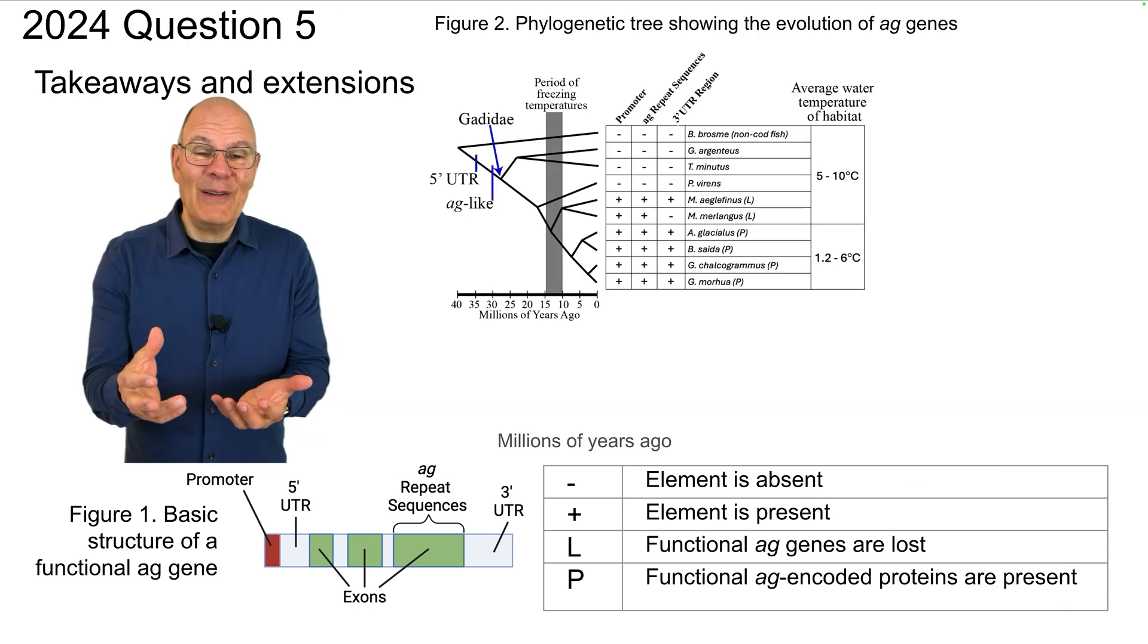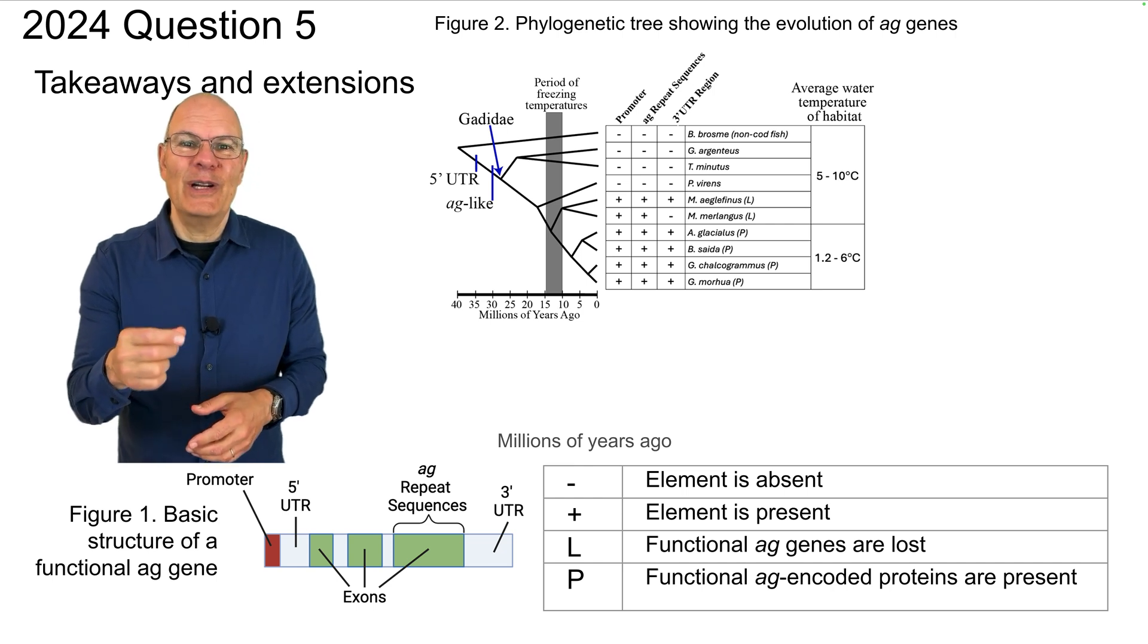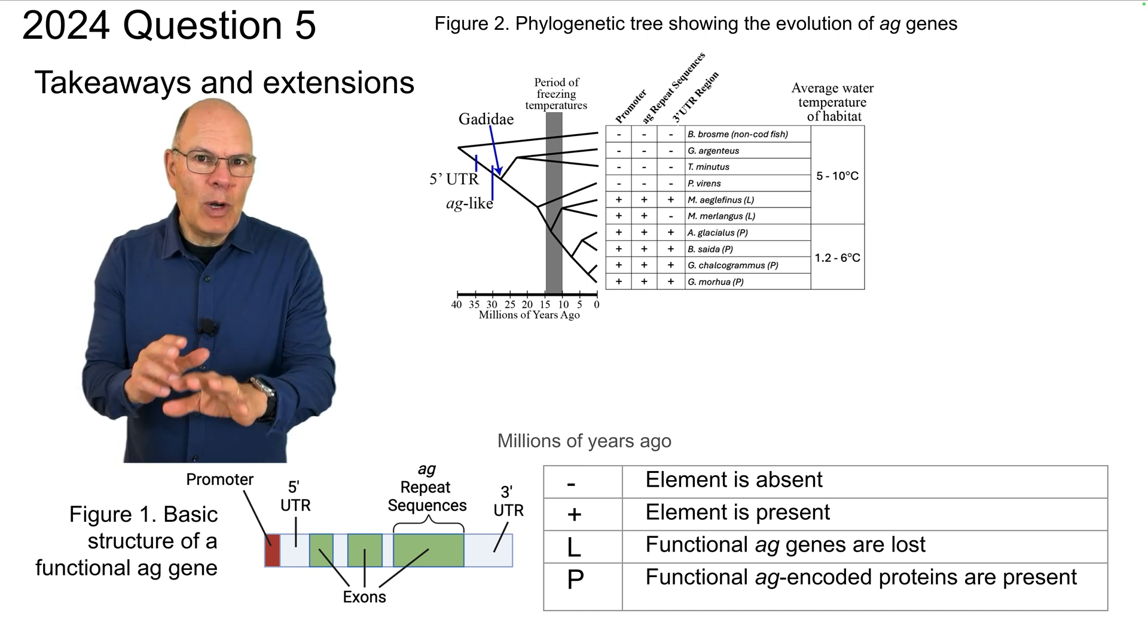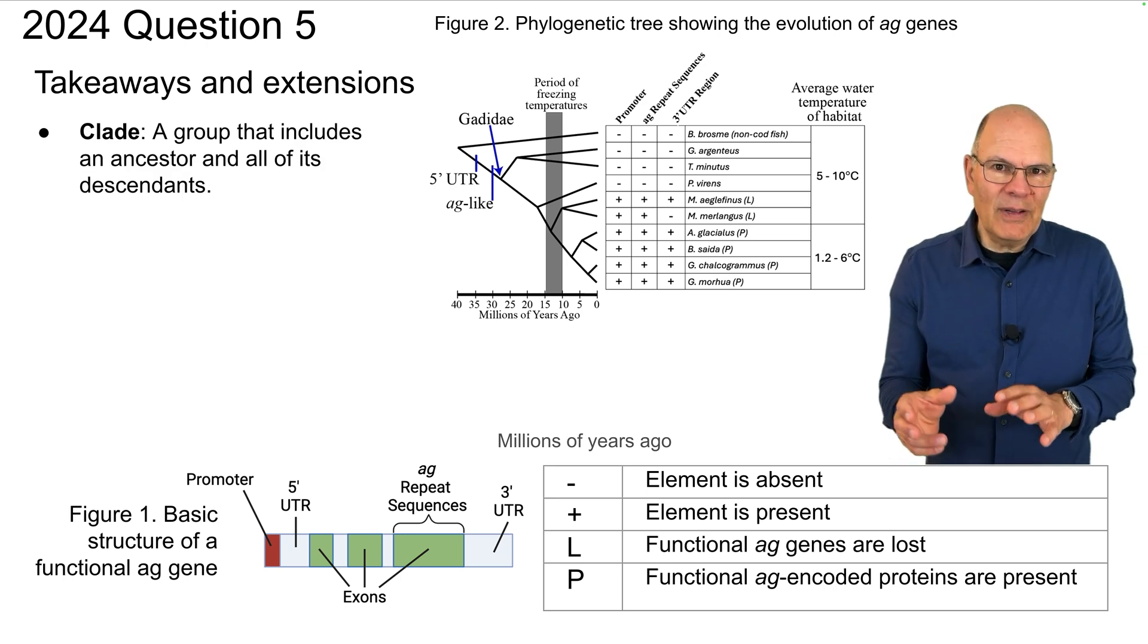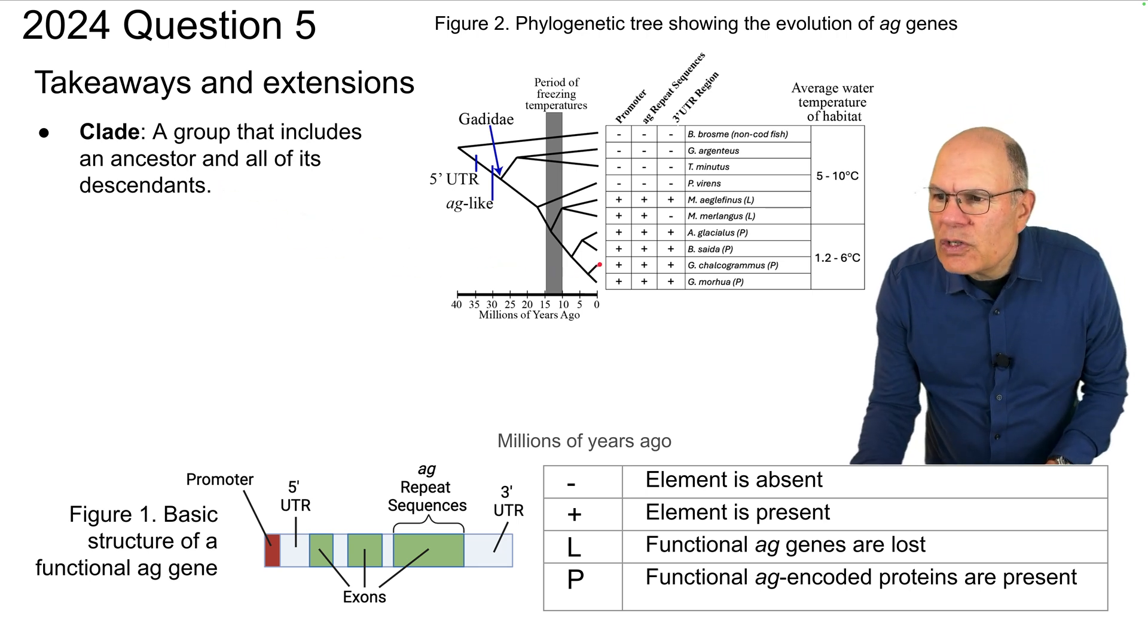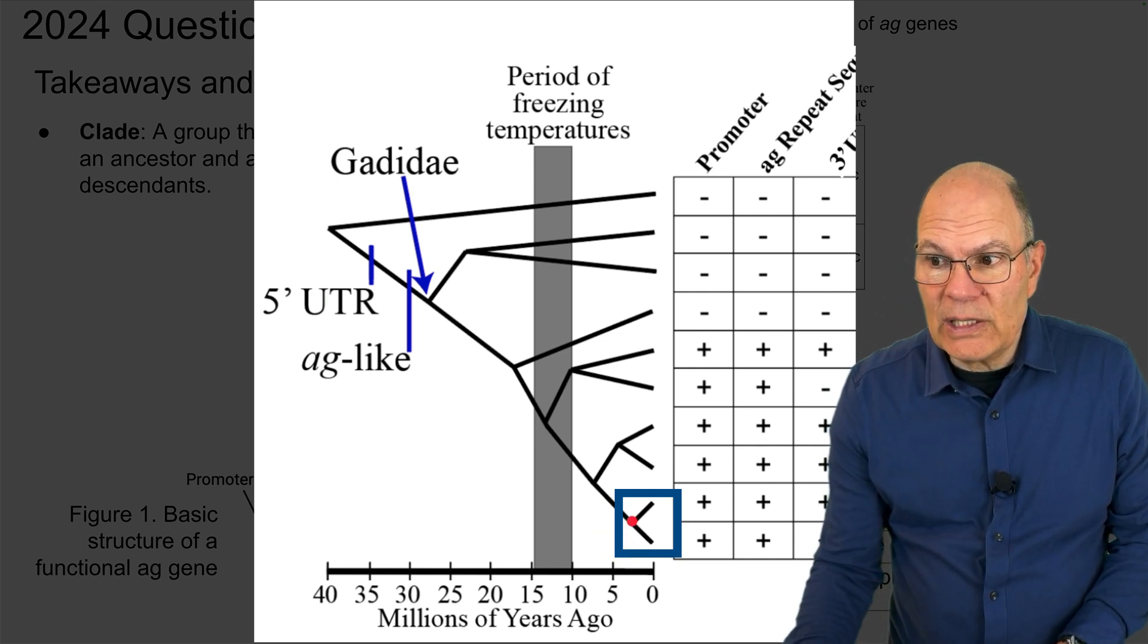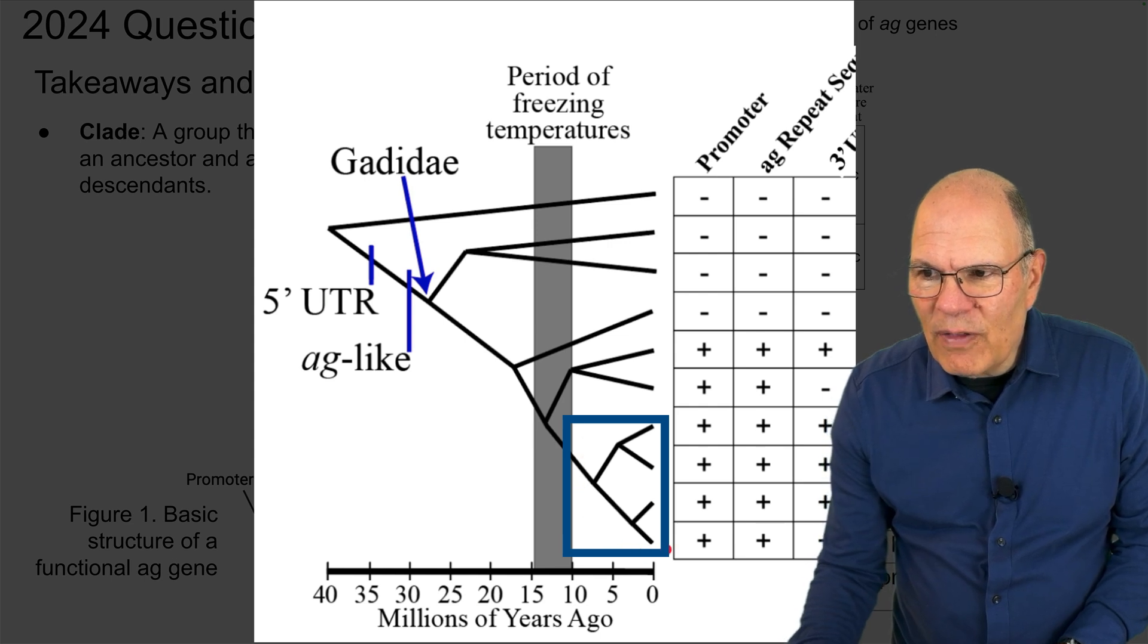What you're doing now which is studying a past FRQ is a fabulous study strategy but what you want to do is to get yourself ready for future FRQs like the ones that are coming up on this year's exam. So I want to extend on some of the content that was in this question. One important idea is the idea of a clade. It wasn't mentioned in this question. I used the term. A clade is a group that includes an ancestor and all of its descendants. So these two species over here would constitute a clade, the common ancestor being right over here. This is also a clade. Here's its common ancestor and here's another clade that would consist of these four species.